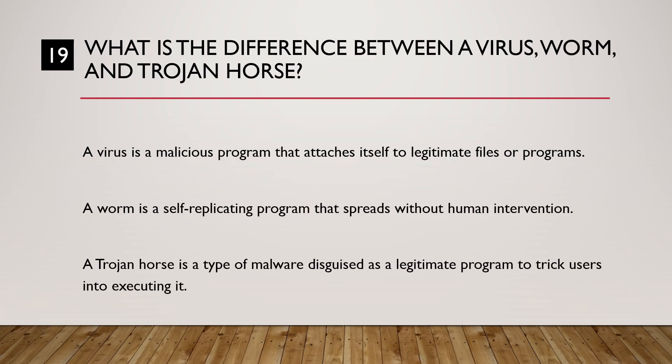Question: What is the difference between a virus, a worm, and a trojan horse? A virus is a malicious program that attaches itself to legitimate files or programs. A worm is a self-replicating program that spreads without human intervention. A trojan horse is malware disguised as a legitimate program to trick users into executing it.